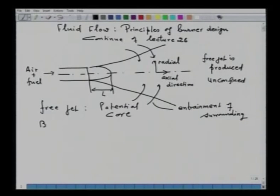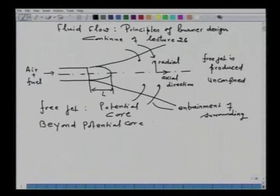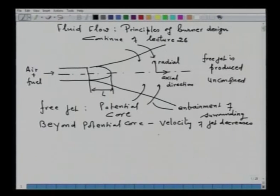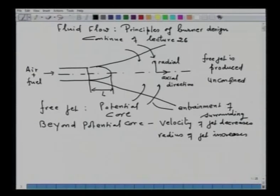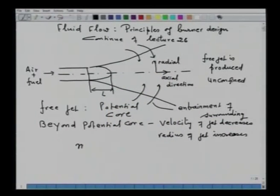Beyond the potential core, the velocity of the jet decreases and the radius of the jet increases, because of the entrainment of the surrounding. The radius of the jet increases because the mass of the jet increases. The mass of the jet at any point downstream, m_x, is the mass at any distance x downstream the burner, beyond the potential core.